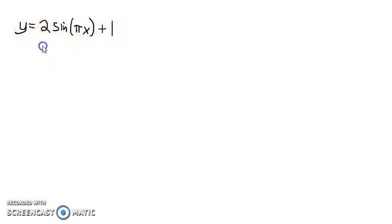If we have an equation like this, the 2 here tells us the amplitude and the 1 tells us the midline, or the vertical shift and the vertical stretch. The π here tells us the period or is related to the period. We're not going to worry about that part right now.